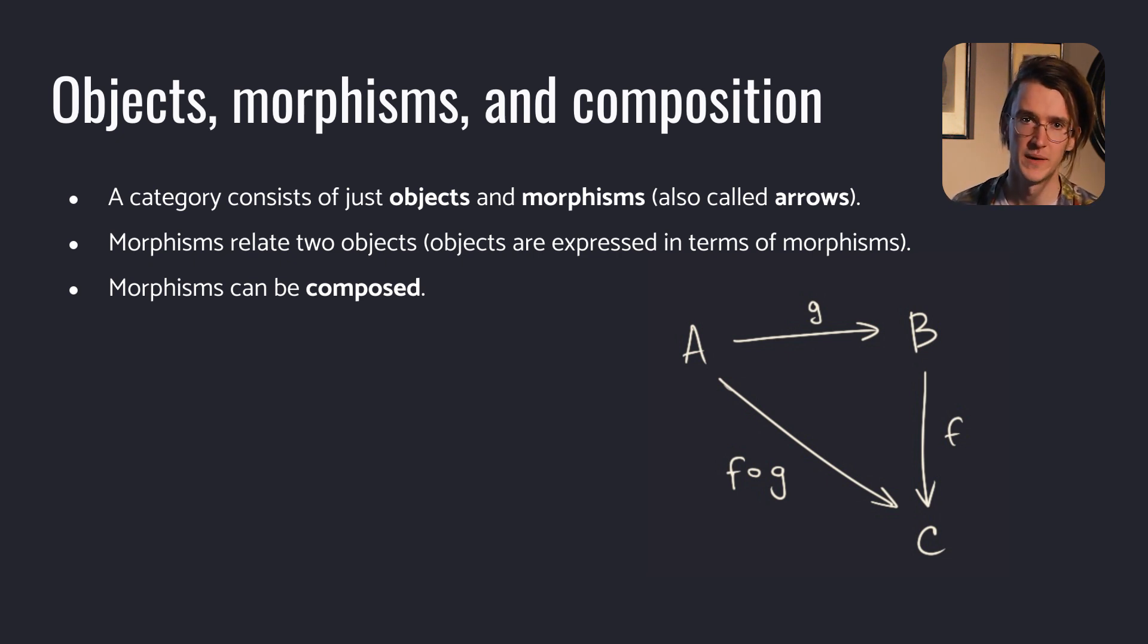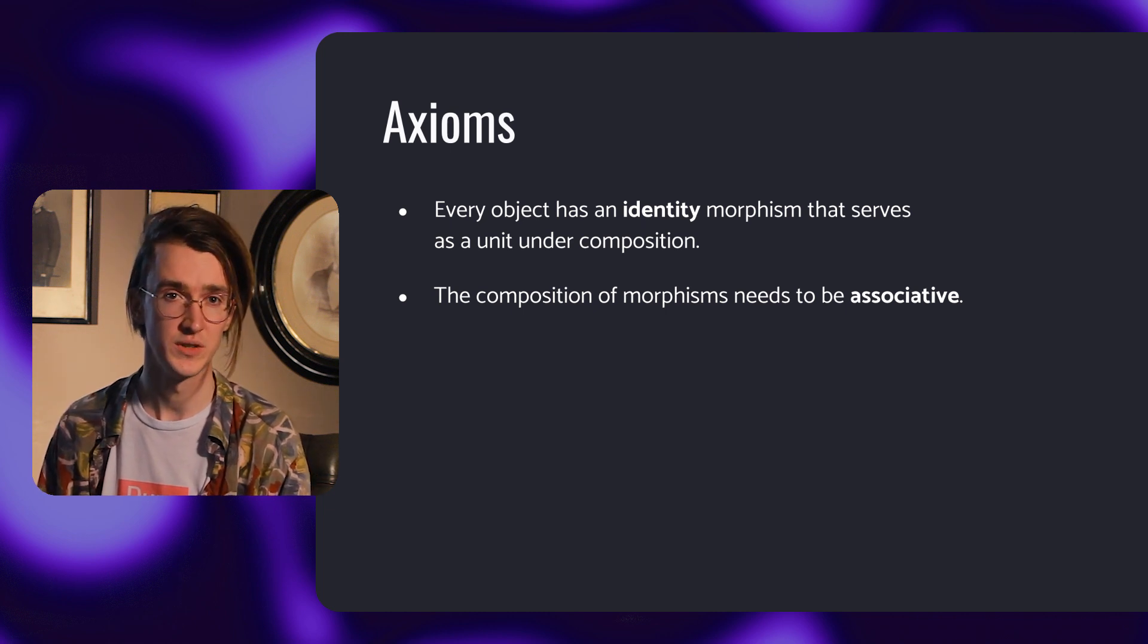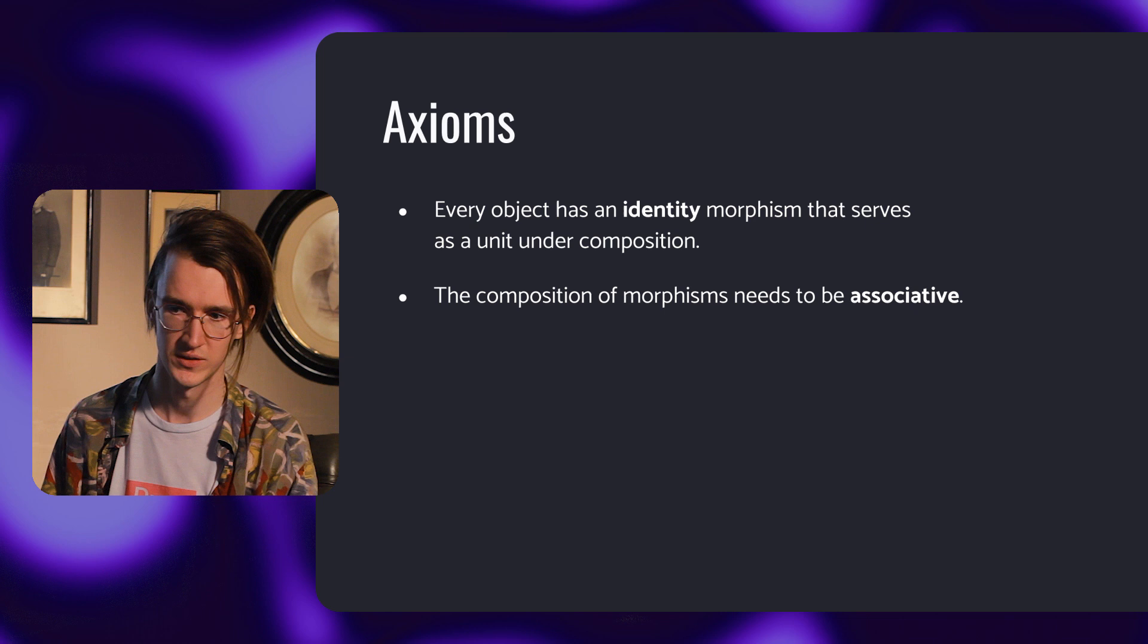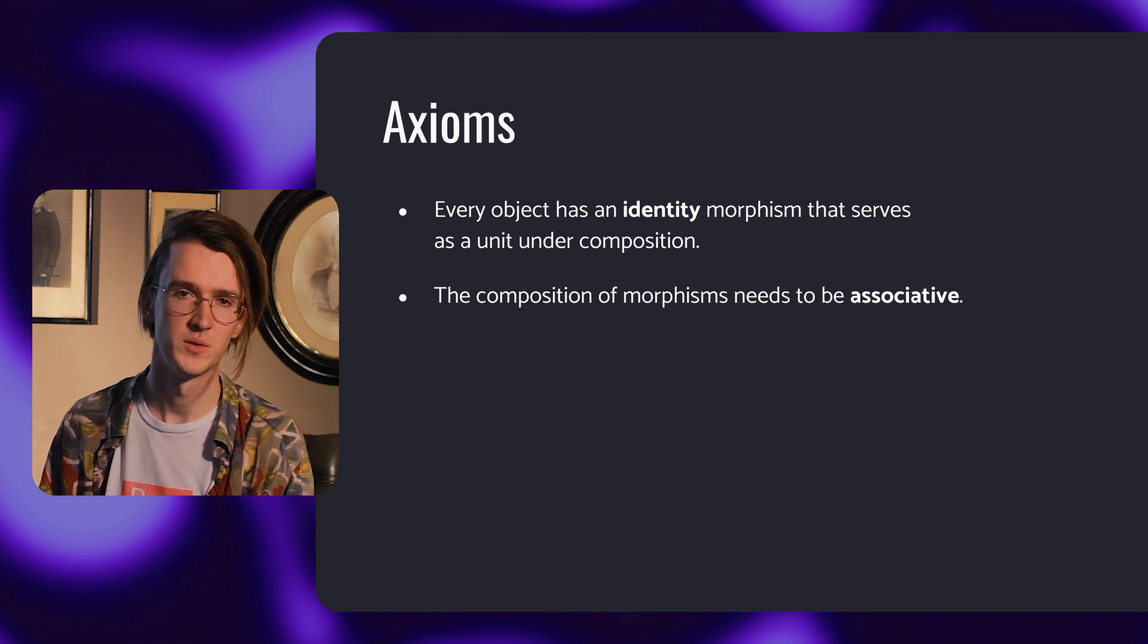Categories are the basic construct of category theory. A category consists of objects and morphisms, which are also called arrows. Objects are expressed in terms of morphisms. Morphisms can be composed. The following axioms must hold: every object has an identity morphism that serves as a unit under composition, and the composition of morphisms needs to be associative.